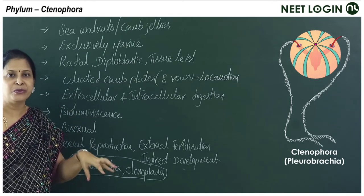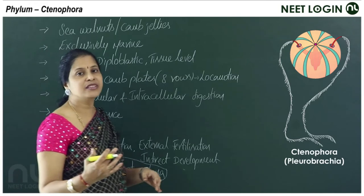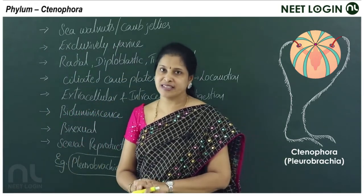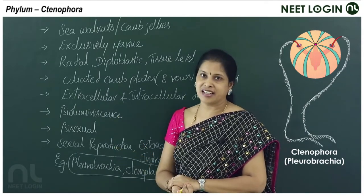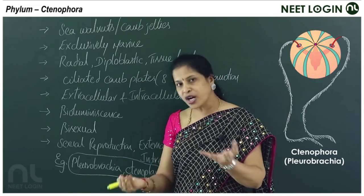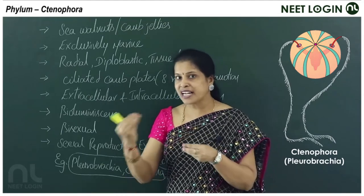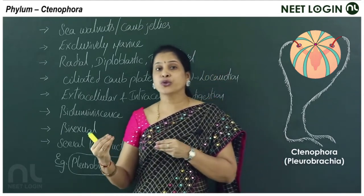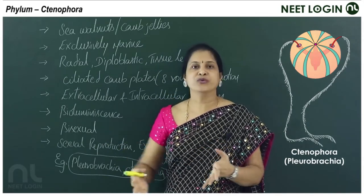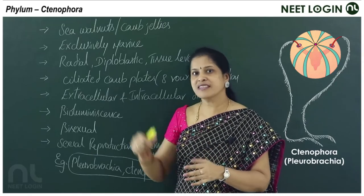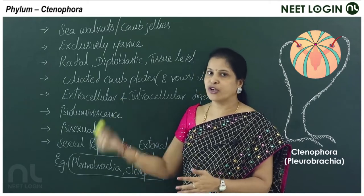A very interesting characteristic feature of ctenophorans is bioluminescence — the emission of light from living organisms. This is a characteristic feature of phylum Ctenophora. They emit light to attract prey, attract mates, and stun predators.